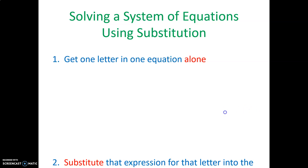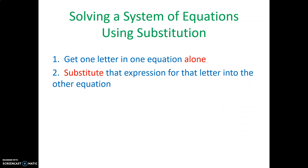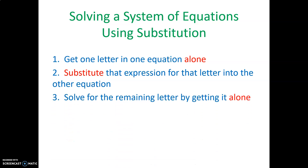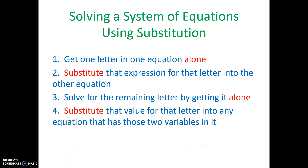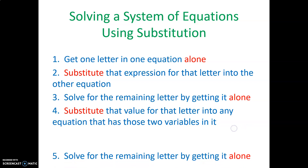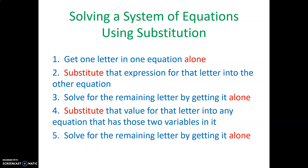You first get one letter in one equation alone, then you substitute that expression for that letter into the other equation. Solve for the remaining letter by getting it alone, substitute that value into any equation that has those two variables in it, and then solve for the remaining letter by getting it alone. Those are the five steps — alone, substitute, alone, substitute, alone — to solve a system of equations using substitution.